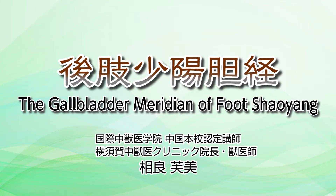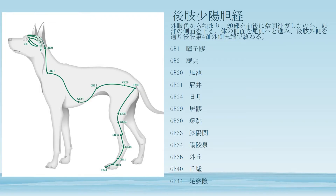The gallbladder meridian of foot Shao Yang starts from the outer canthus of the eye, goes back and forth on the side of the head, then runs lateral to the body, all the way down to the back leg, and finishes at the fourth toe.